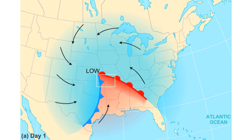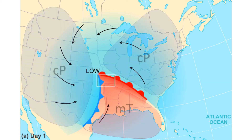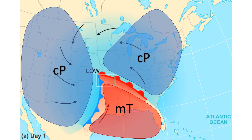Here we can see a mid-latitude cyclone along with the corresponding air masses: a maritime tropical air mass moving north out of the Gulf of Mexico, a continental polar air mass moving south out of Canada, and a continental polar air mass from the previous weather system ahead of the warm front.